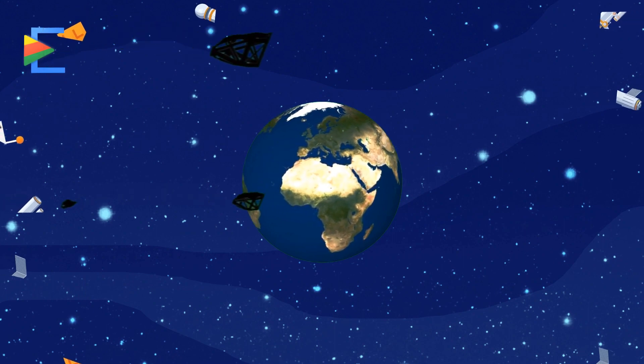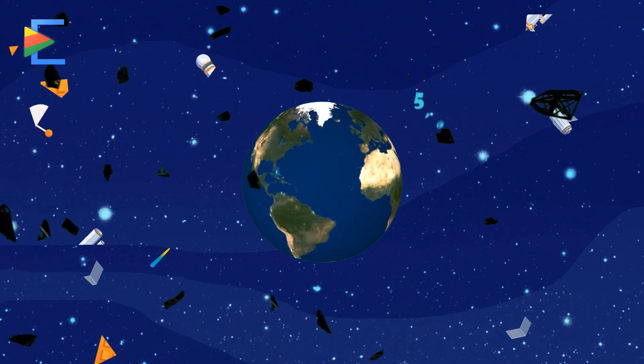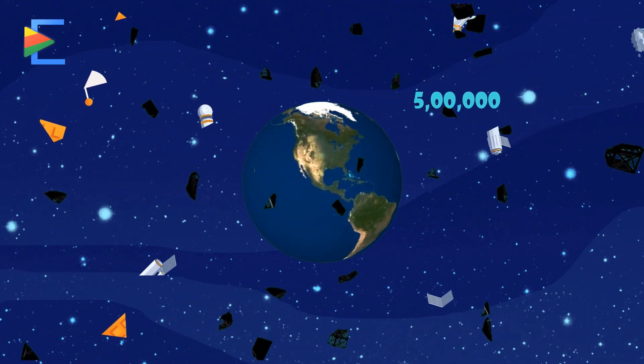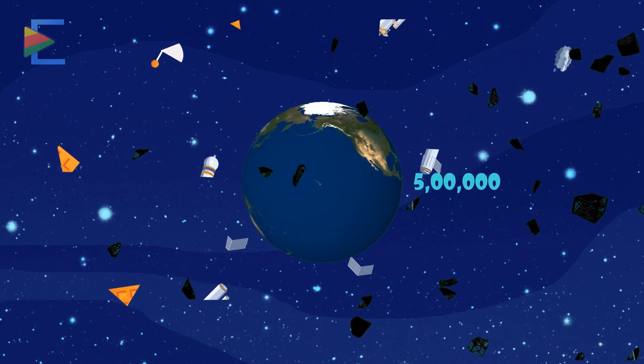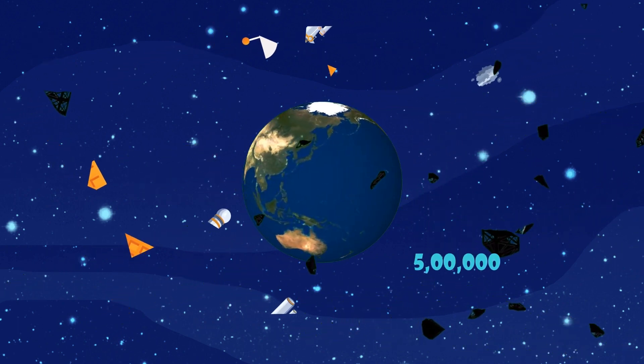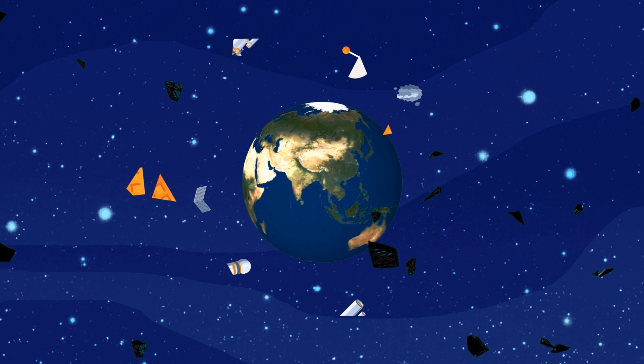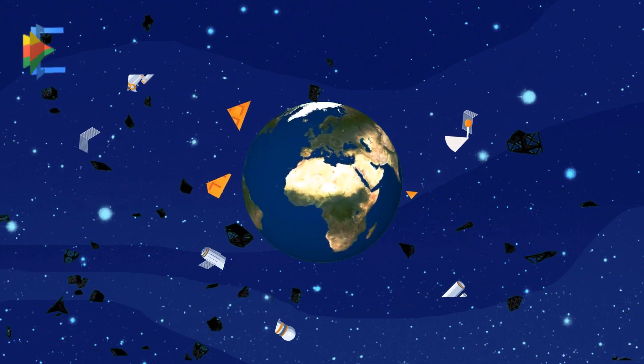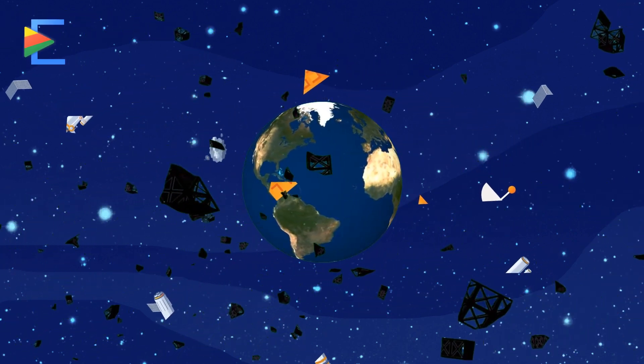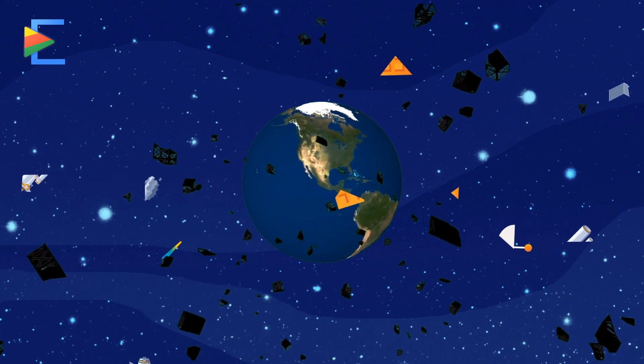Scientists also estimate that there are about 500,000 pieces of space junk today, including fragments from rockets and satellites, and everyday items like spanners dropped during construction of the International Space Station.